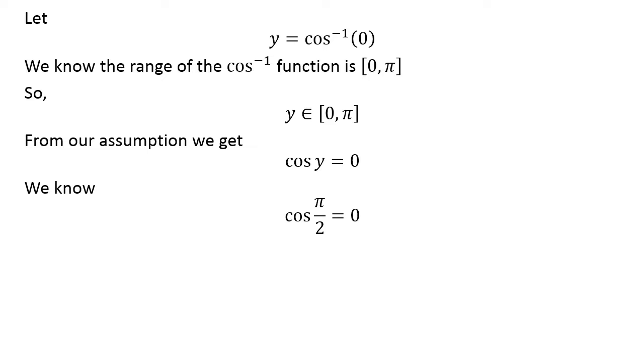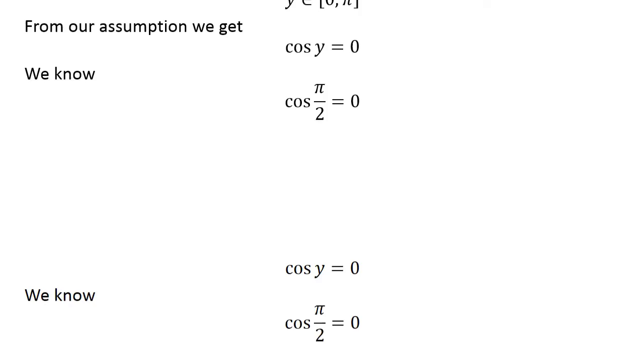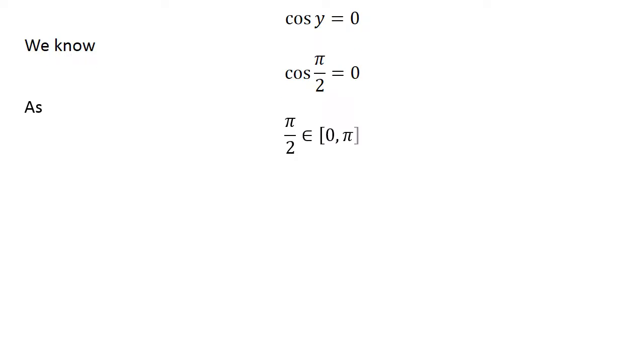We know cosine of half of π is equal to 0. As half of π lies in the close interval of 0 and π, so half of π is the principal value of inverse of cosine of 0.